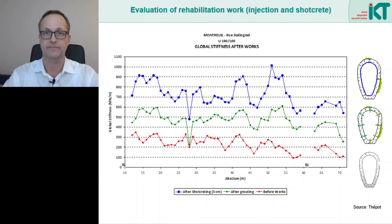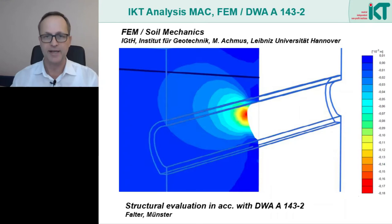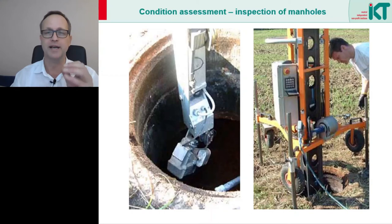Here we see the MAC measuring system in use in a smaller masonry egg profile. The system works semi-automatically and the data is transmitted via a radio link. The subsequent data analysis is of particular importance — the finite element method can be used to make far-reaching statements about the stability of the system before and after rehabilitation. There are also measuring systems to precisely determine the geometry of the manhole, which is interesting if there has already been a loss of wall thickness due to corrosion; this data is quite important for the preparation of any refurbishment.